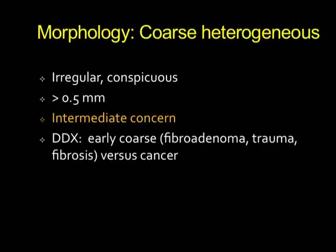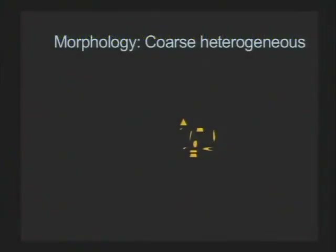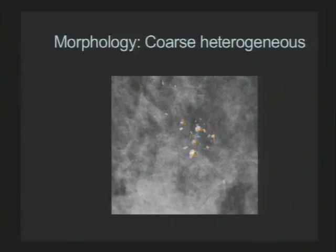Coarse heterogeneous calcifications are irregular, conspicuous, but big calcifications of intermediate concern. The reason they're of concern is that you can't tell if they're early coarse calcifications or a cancer, and you don't want to wait to find out. So for this reason, we biopsy them. There are many different shapes and sizes — you can see the edges clearly, and they're big.